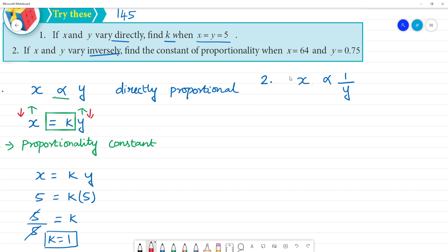What is the meaning? If x is increasing, y is decreasing. So if x is increasing, y is decreasing. Now if x is decreasing, y is increasing. So it's opposite. So what do we say? Inversely proportional. So x is equal to k times 1 by y, the proportionality constant.